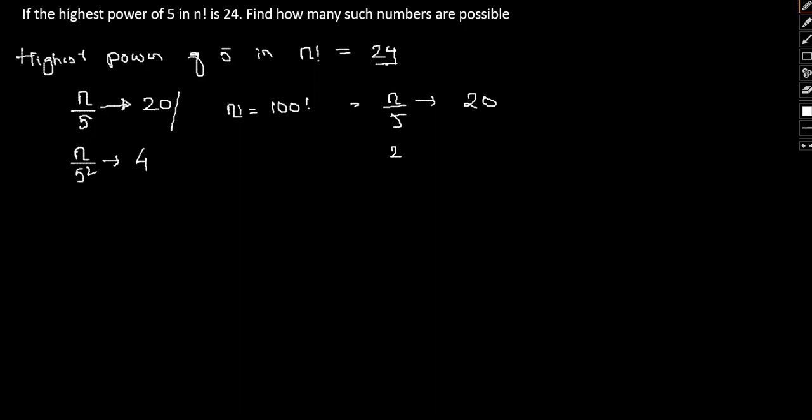And then if I again do n by 5, let me write this properly. Will be equal to say 100 by 5. Or we have 20. Again, if I do 100 by 25, then we have 4. So, what we have 20 plus 4, 24.